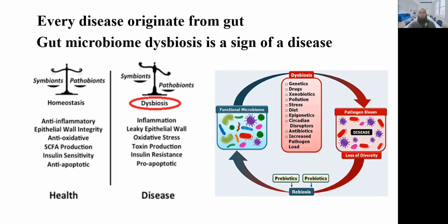Dysbiosis is caused by either genetics, drugs, or environmental pollutants. When there is dysbiosis, it can be reduced by using probiotics. Probiotics are used in combination, and today our actual topic is about probiotics — specifically how they work in terms of their role in modulating mRNA.